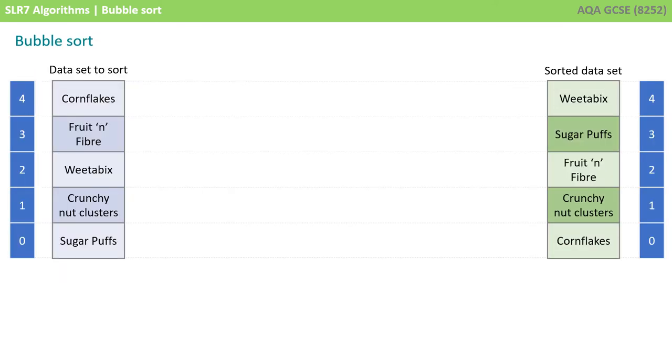Here's a dataset of breakfast cereals. The original data to sort is shown on the left, and the sorted data that we're trying to achieve is shown in green on the right. The object is to put them in alphabetical order with the lowest one at the bottom: cornflakes, crunch nut clusters, fruit and fibre, sugar puffs and Weetabix at the top. We're now going to go through the steps of the algorithm to see how we can get to the sorted dataset.